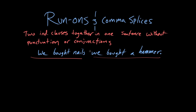There are a couple of ways we could fix this sentence. One way would be to add a semi-colon: we bought nails, semi-colon, we bought a hammer. Another way would be to add a comma and the conjunction and, connecting those two clauses. It's called a run-on because it's sort of like a runaway train — it doesn't have enough stoppage in it.